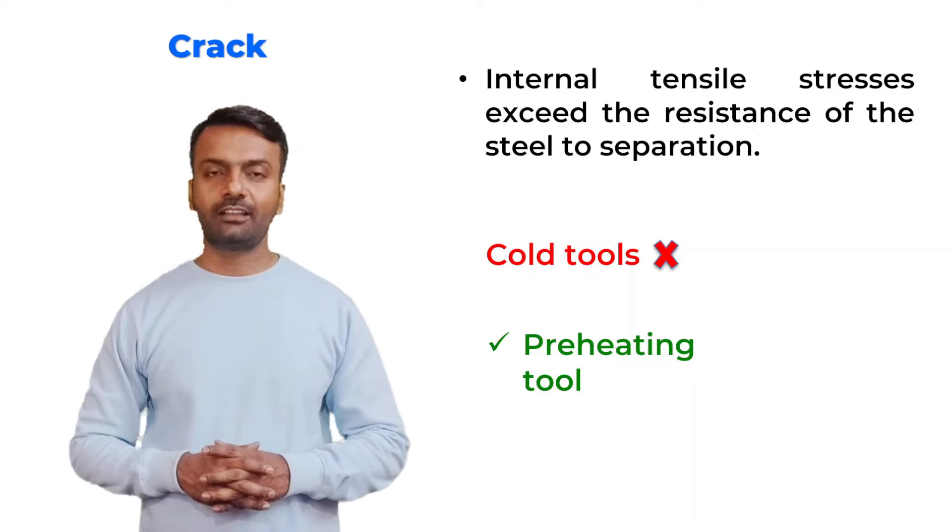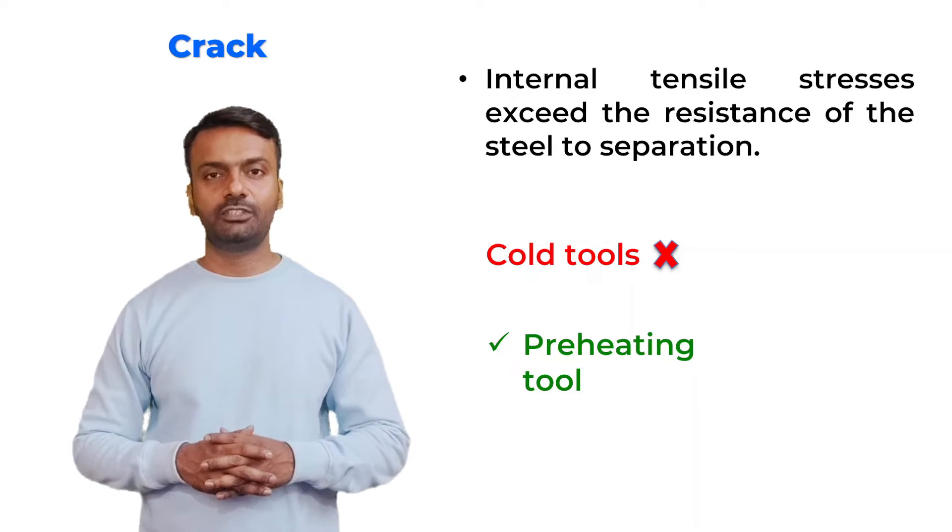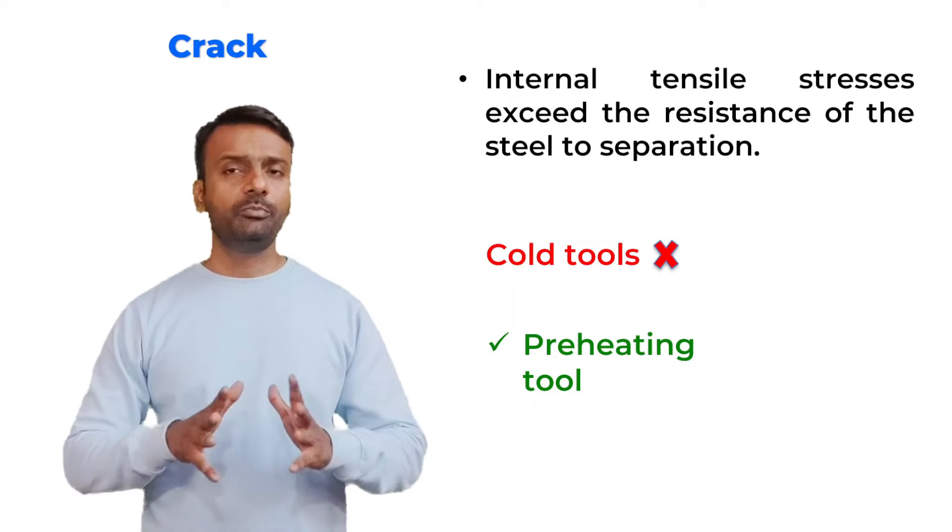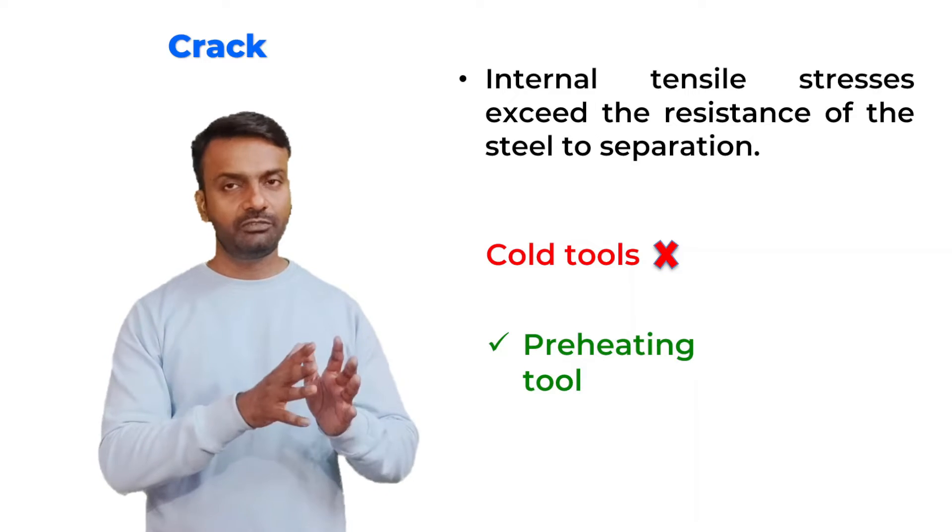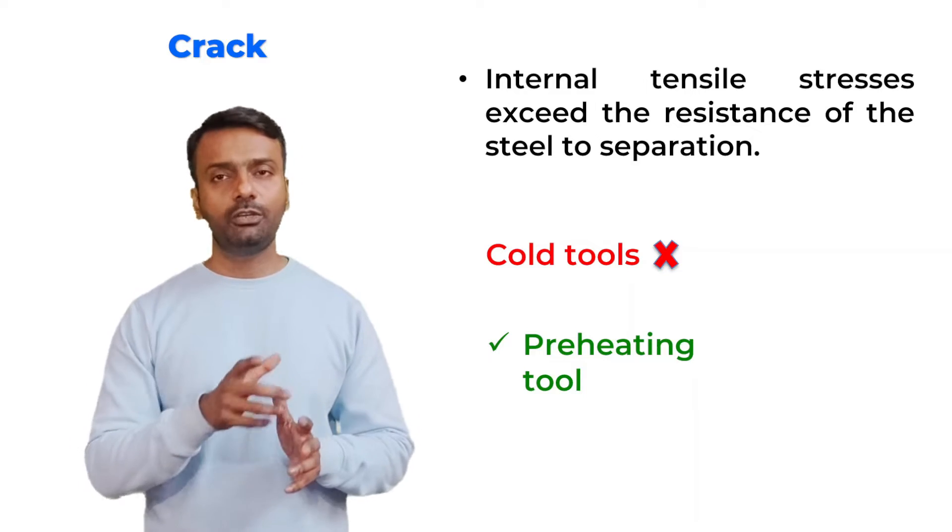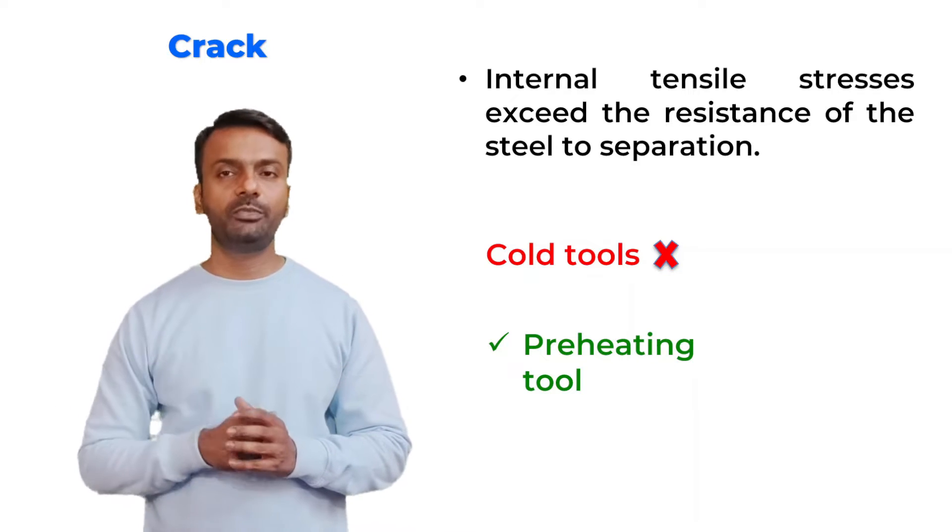First defect is crack. Internal tensile stresses exceed the resistance of the steel to separation. The main reason for cracks on the surface of heat treated samples is that when removing the sample from the furnace, you are using a cold tool to remove the sample from the furnace.